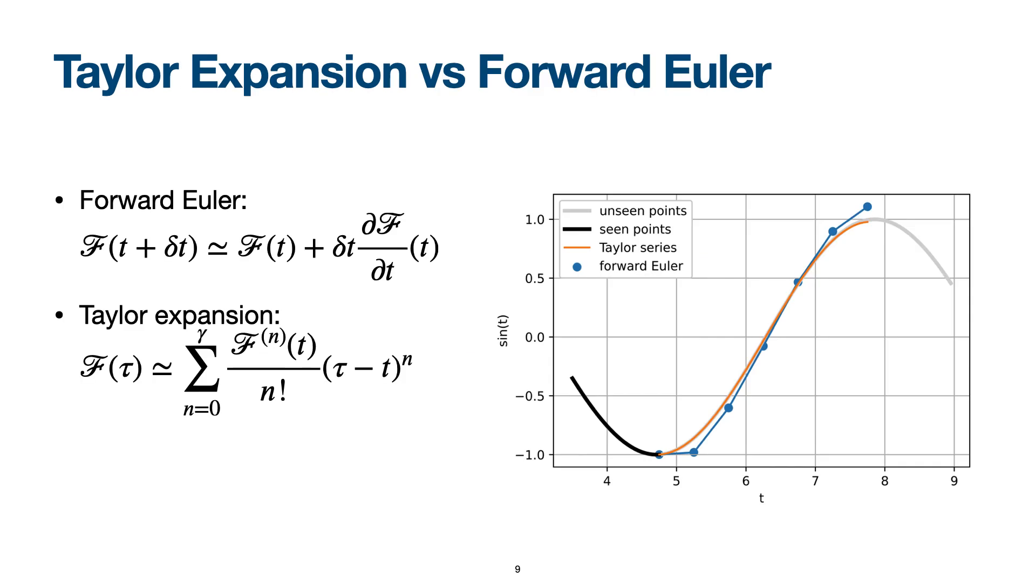The difference of Taylor expansion and forward Euler. It is clear to see the discrete forward Euler and continuous Taylor series predictions in the figure.